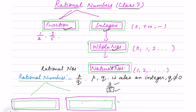For example, 3 by 5, where 3 and 5 are integers and 5 is not equal to 0, so it is a rational number. Same way, 2 is a natural number and it is also a rational number because we can represent it as 2 by 1, where the denominator is not equal to 0. There are two types of rational numbers.